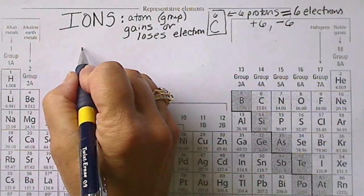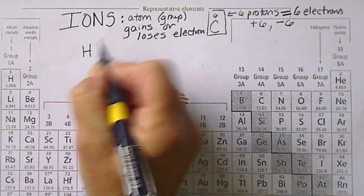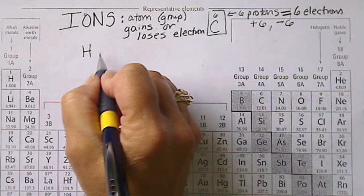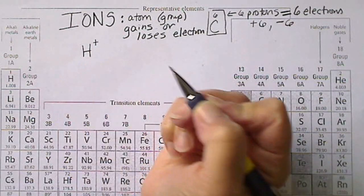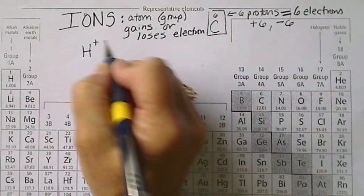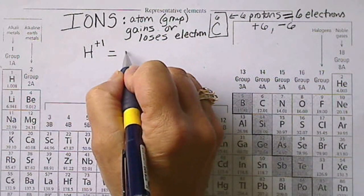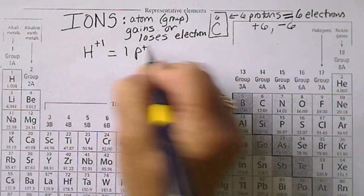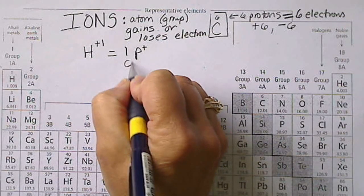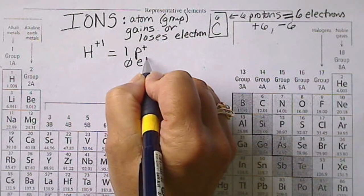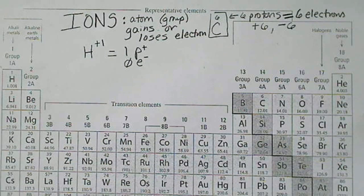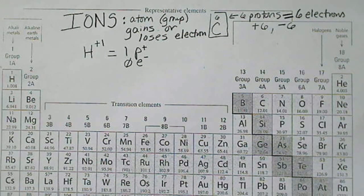For example, hydrogen likes to exist as hydrogen plus, and if we don't have a number there it's understood to be a plus one. This would be a hydrogen that has one proton, which is positive, and zero electrons. So hydrogen is happy to lose one electron - it really doesn't lose the electron, another atom steals it.